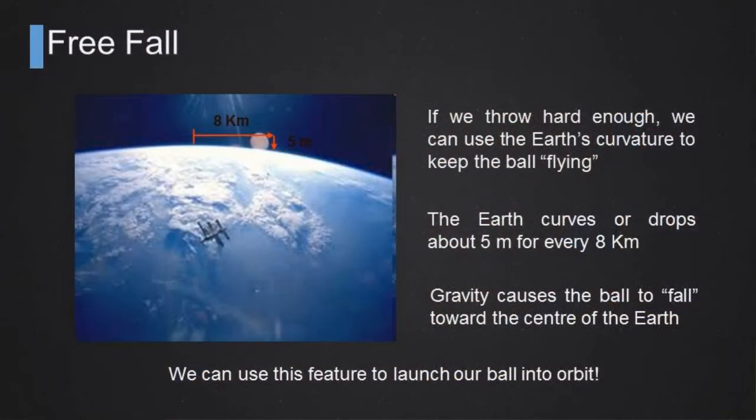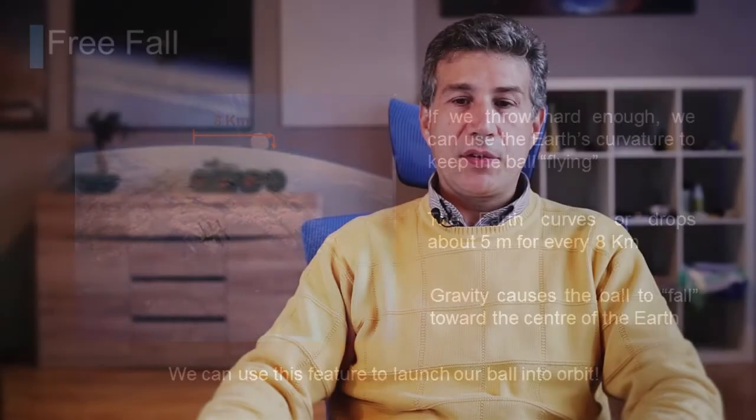Now, if we threw this ball hard enough, we could use the earth curvature to keep the ball flying. In fact, we know that every 8 kilometers the earth curves, or we can say drops of 5 meters. So if we threw hard enough, this means we gave a sufficient velocity to our ball, we could have a continuous fall and the ball actually would stay orbiting around the earth. We can use this feature to throw objects into orbit.